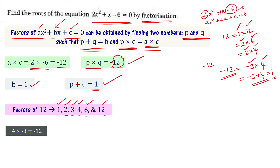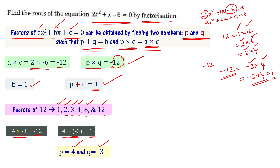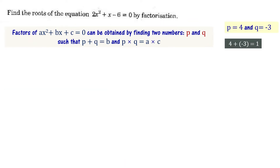So 4 × (-3) = -12, and 4 + (-3) = 1. Our requirement is met. We call p = 4 and q = -3. We found two numbers p and q: 4 and -3. Since 4 + (-3) = 1, we can split the middle term x in the equation as 4x - 3x.